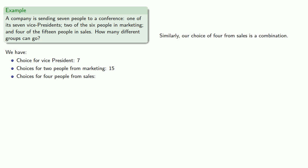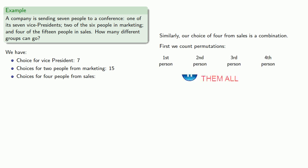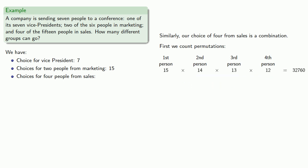Similarly, our choice of four people from sales is also a combination. So again, first we count our permutations. We have a first, second, third, and fourth person to choose, and we can do that in a whole bunch of permutations.